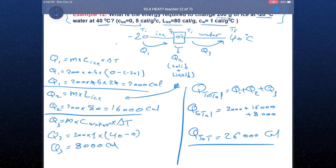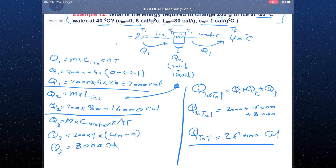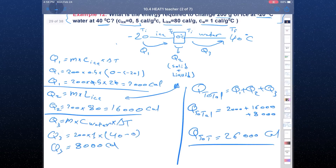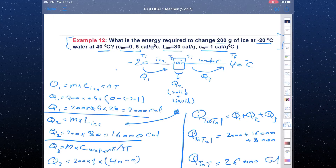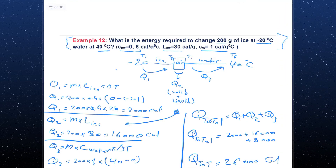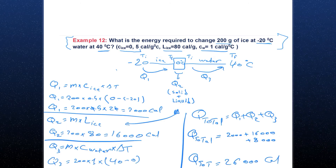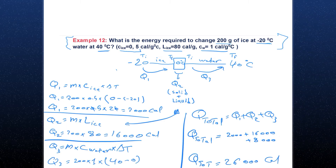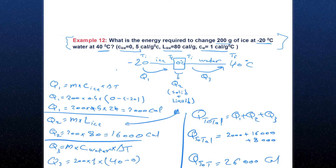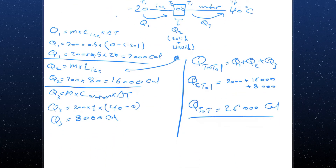That is how we separate the heats. First, read the question and know the temperature range. Between −20°C and 40°C there is a 0°C point — a phase-change point — because ice changes to water at 0°C. That is why we separate it into three parts.